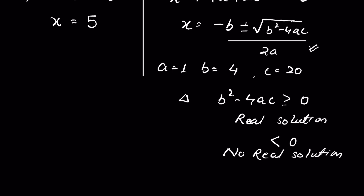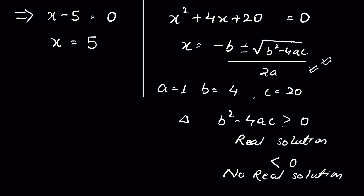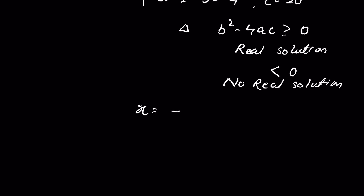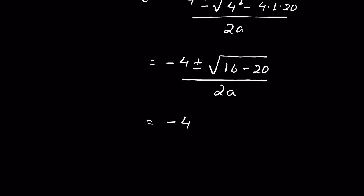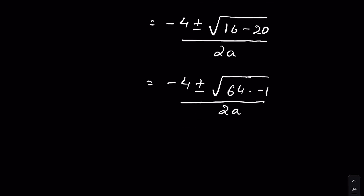If the question asks for all solutions, real as well as complex, we can proceed with the formula. x equals minus 4 plus or minus the square root of 4 squared minus 4 times 1 times 20, over 2. That is minus 4 plus or minus the square root of 16 minus 80, which gives the square root of minus 64, or the square root of 64 times minus 1. Since the square root of minus 1 is the imaginary number i, we have the square root of 64 times i.